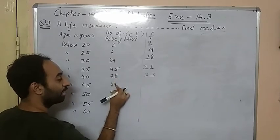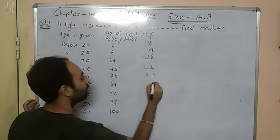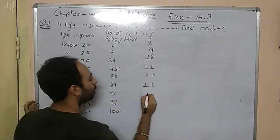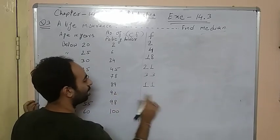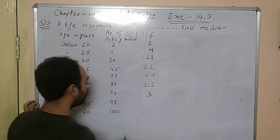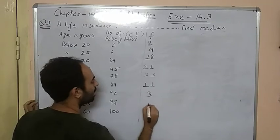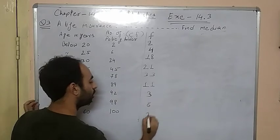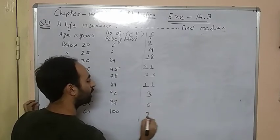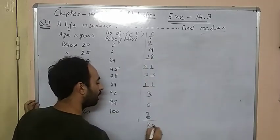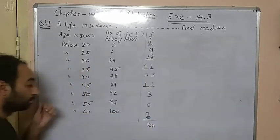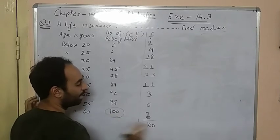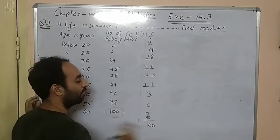Continuing the subtraction: we get 3, then 98 minus 92 gives 6, then 100 minus 98 gives 2. When you do the total, we get 100. The total of frequency always matches the last cumulative frequency value — that is how we know it is correct. We have to find the median.